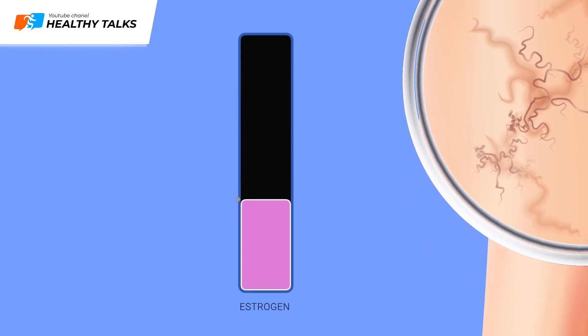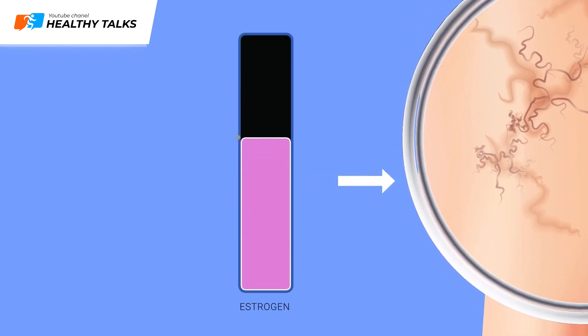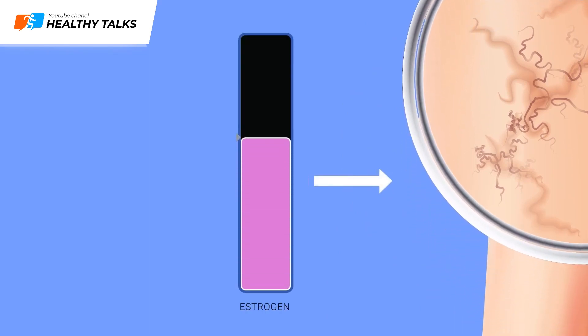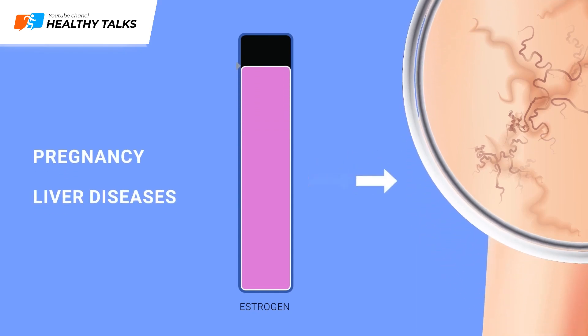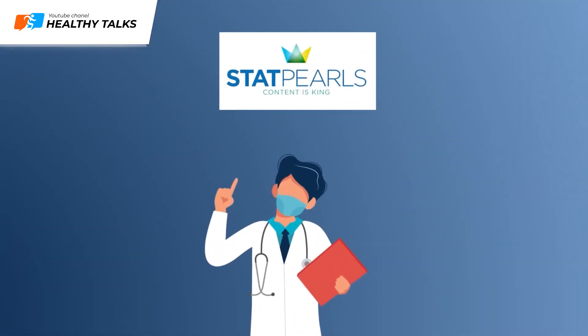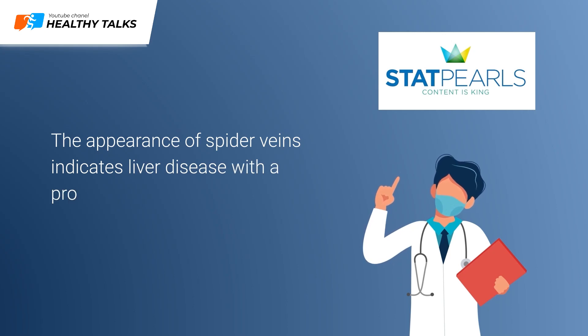Spider veins on the legs appear due to an increase in estrogen levels, which affect the vessels. Estrogen levels increase either during pregnancy or with chronic liver diseases. A large number of spider veins often indicates fibrosis, cirrhosis, or alcoholic hepatitis. According to the StatPearls library, the appearance of a large number of vascular asterisks indicates liver disease with a 95% probability.